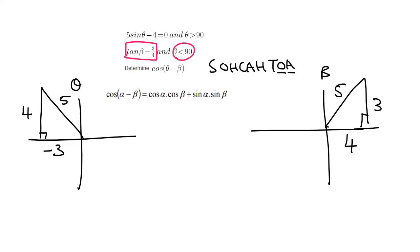Okay, so here's what we have on our formula sheet. Now, of course, we don't have alpha and beta, we've got theta and beta. So we can change this to theta. That means this will change to theta, and that means this one will change to theta. Now we can say that cos theta minus beta should be cos theta, cos beta plus sin theta, sin beta.